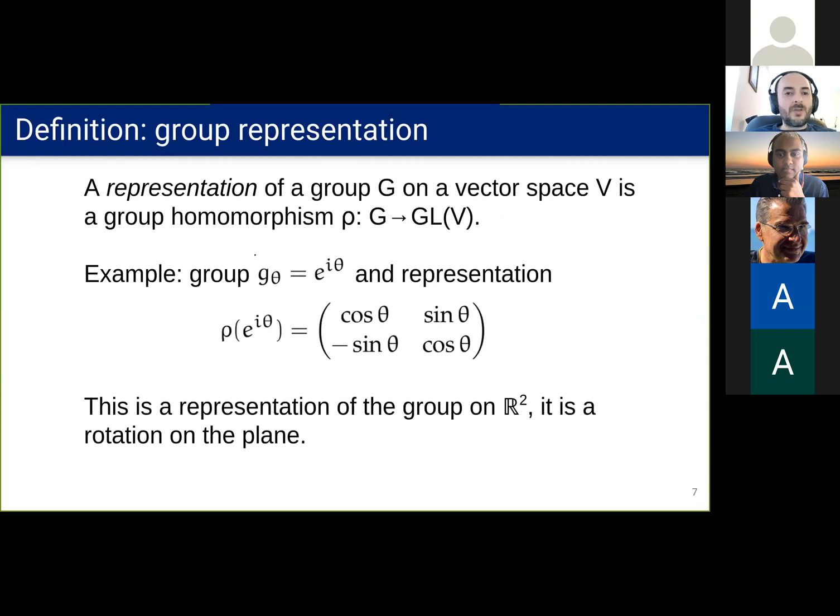We begin with some theory. First, let's define group representations. A group representation maps group elements to linear maps on a vector space. The example here shows the group of unitary complex numbers and its representation as rotations on the plane. Representations will show up in Fourier analysis on groups.